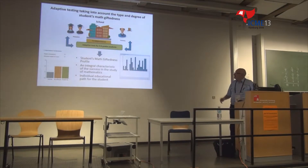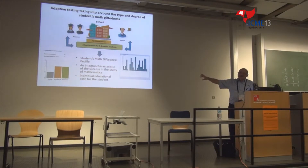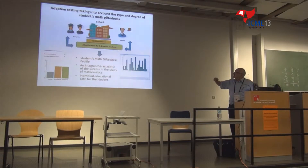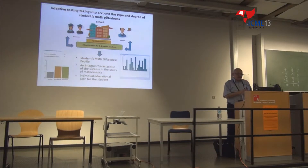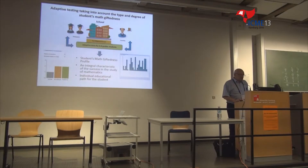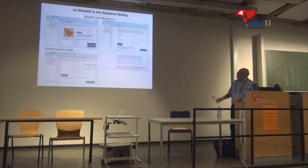How does it work? First, a student is given a diagnostic test by which the giftedness profile is created, shown on the left. There are three circles, and for each circle there is a rectangle representing the level of the student's ability related to that circle. Then the system creates a sequence of problems designed to raise the parts of the profile that are low. After going through these problems, the profile is measured again, and the weak parts are supposed to be strengthened.